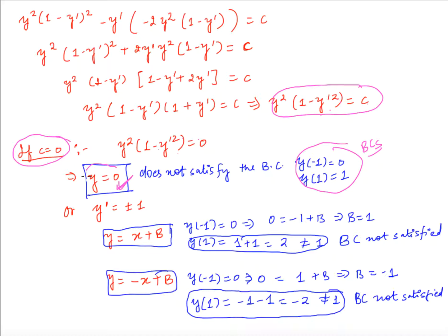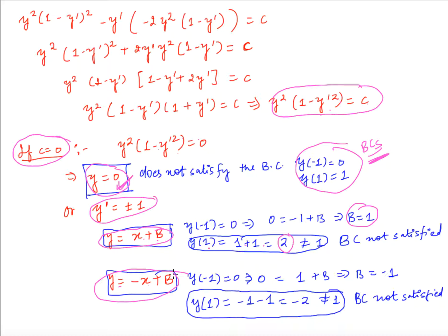The constant solution does not satisfy the boundary conditions. Then we can have y' = ±1, giving y = x + b or y = -x + b. Applying the boundary conditions, we get b = 1, so y = x + 1, but y(1) = 2 ≠ 1. This doesn't satisfy the boundary condition either. Therefore c = 0 is not possible.